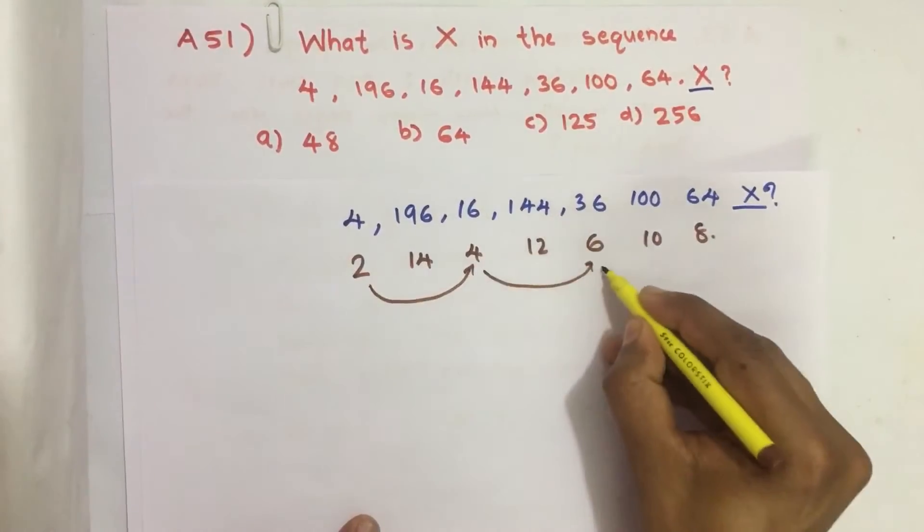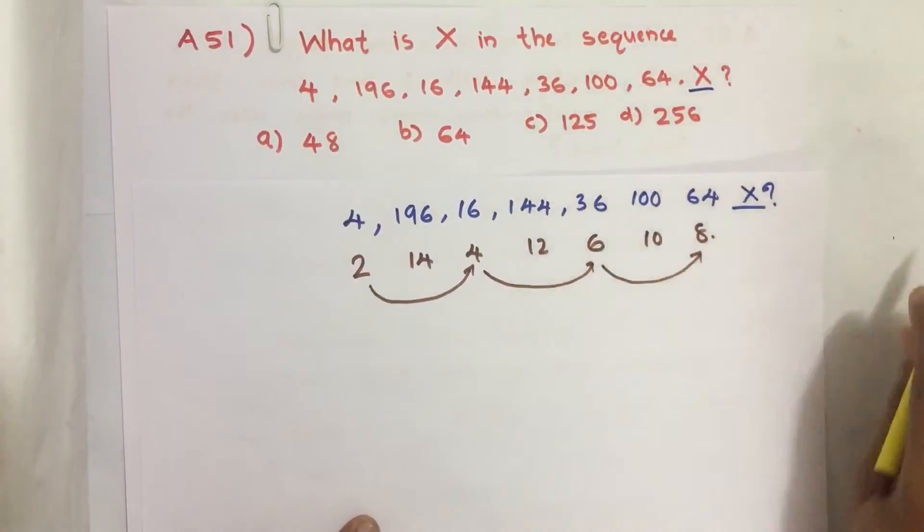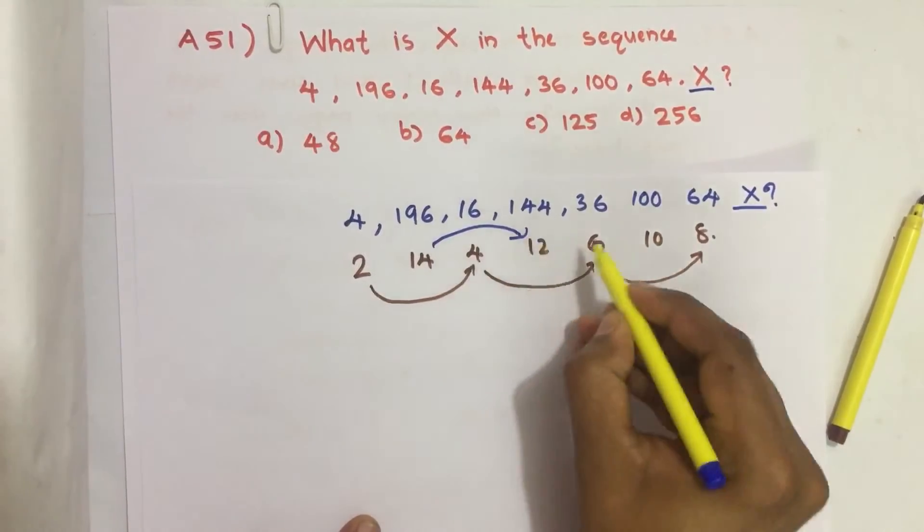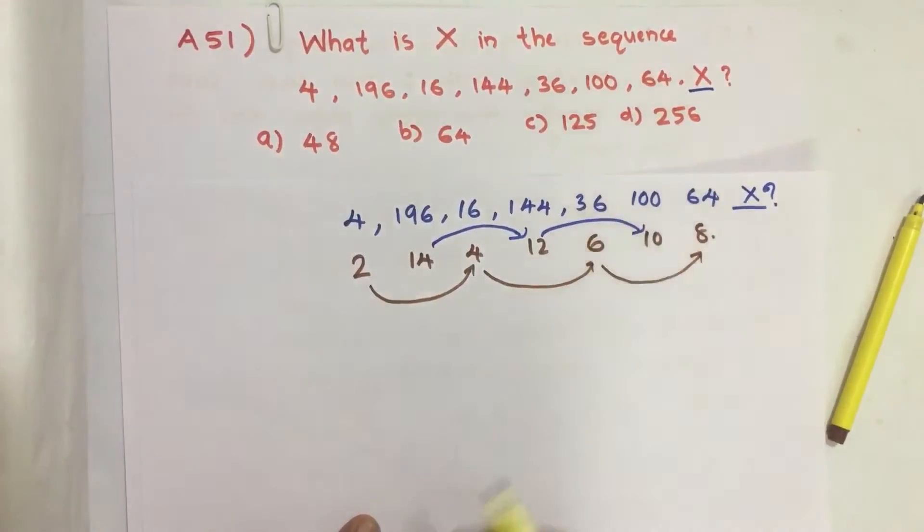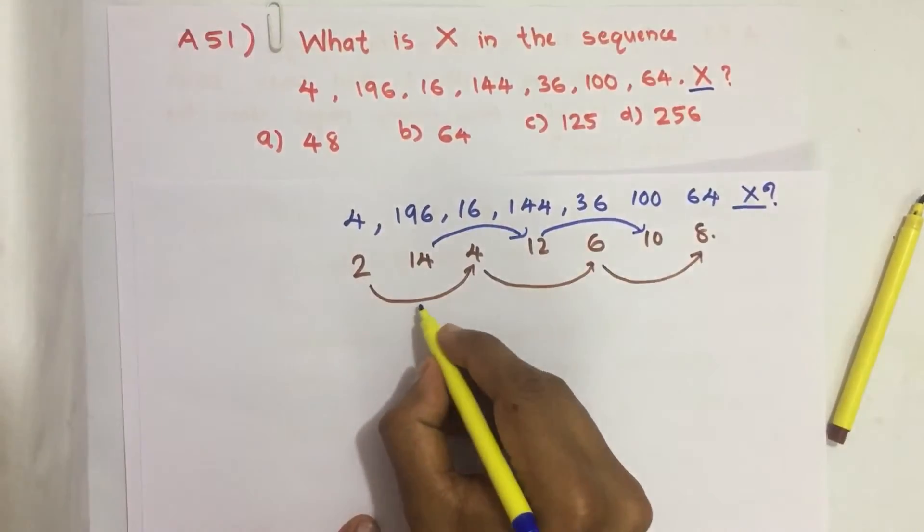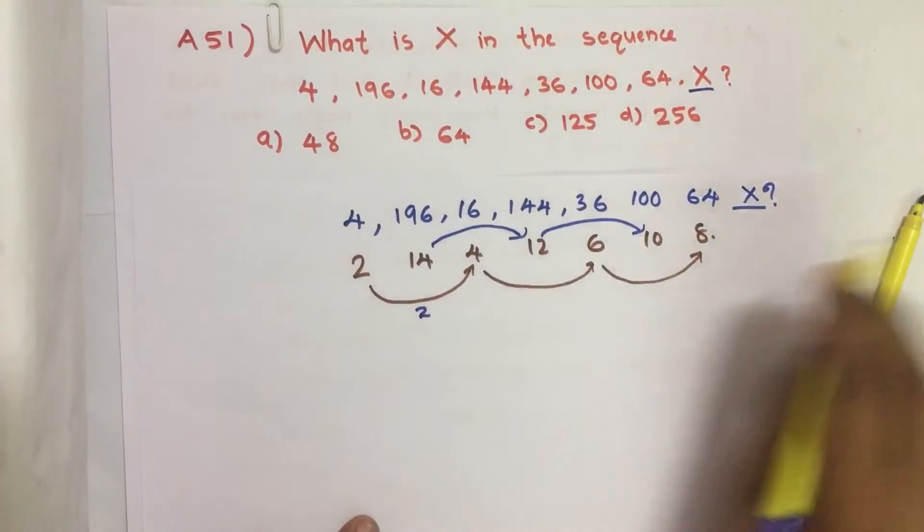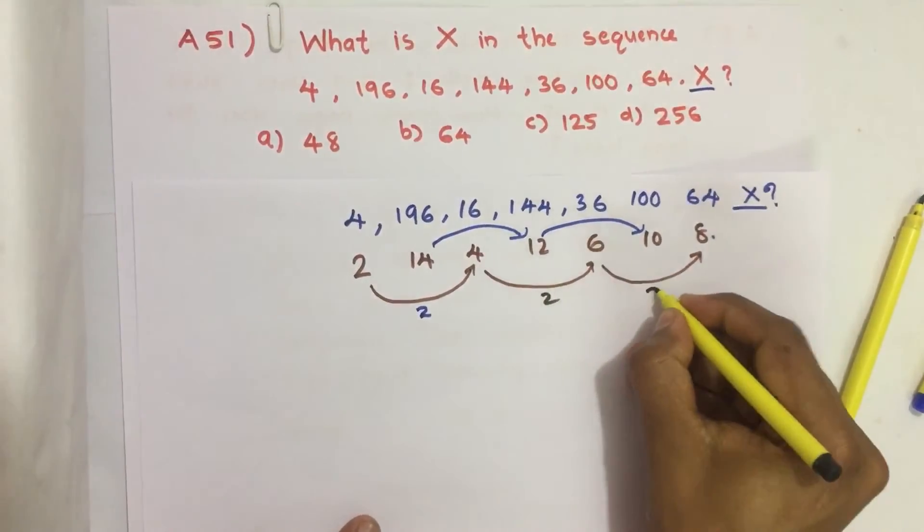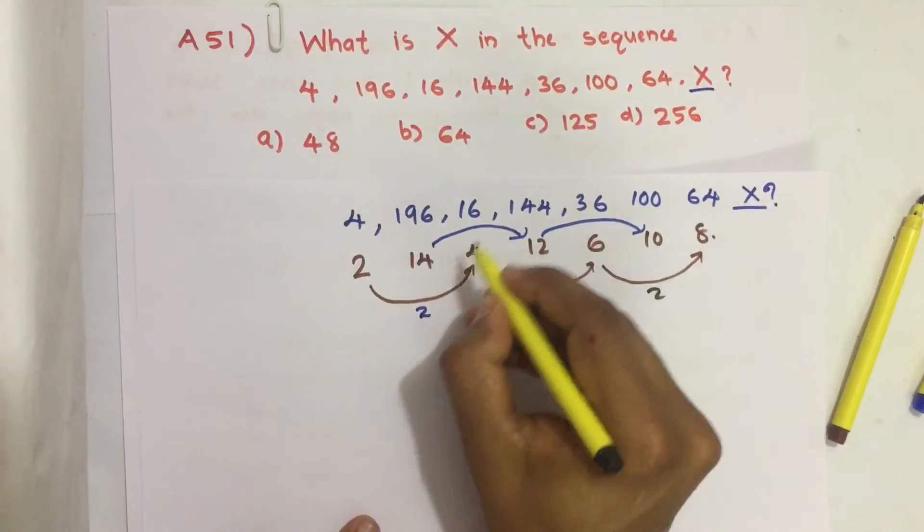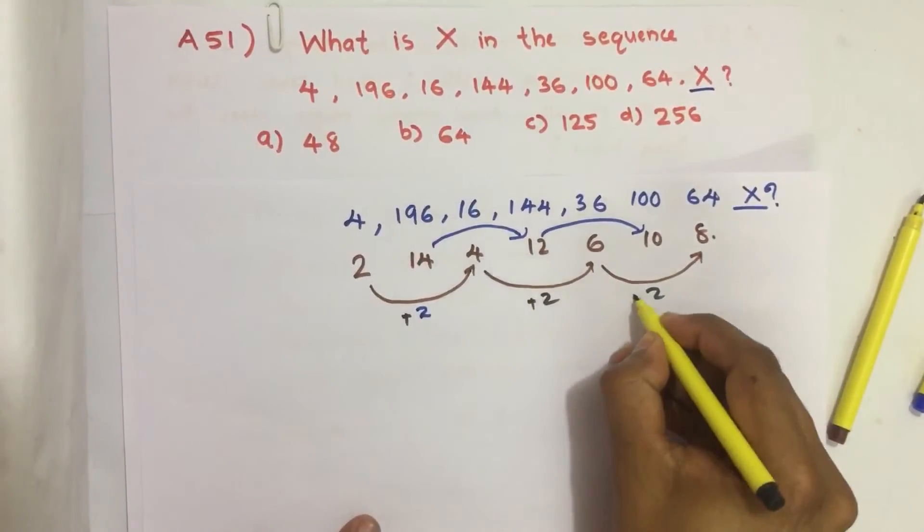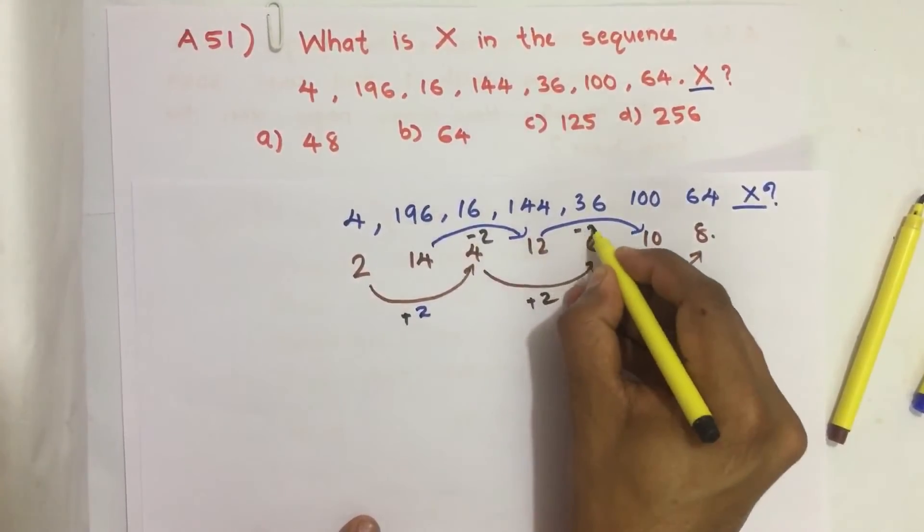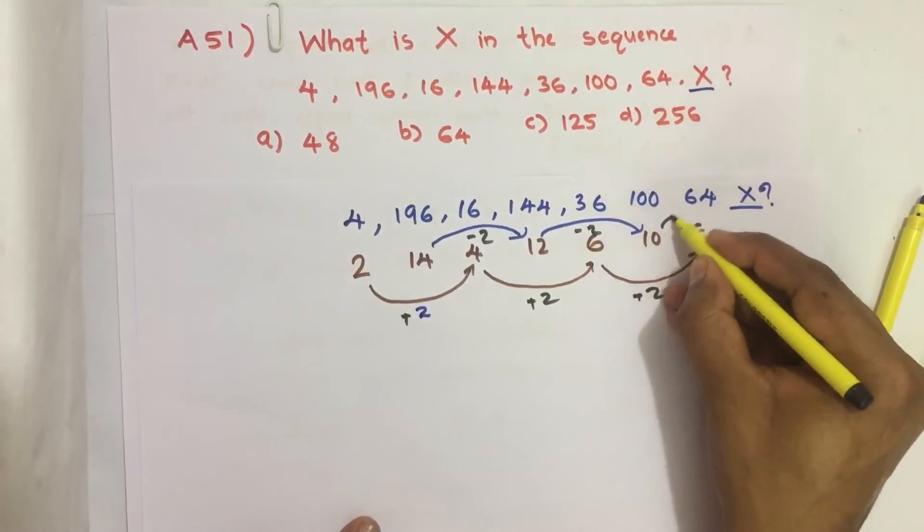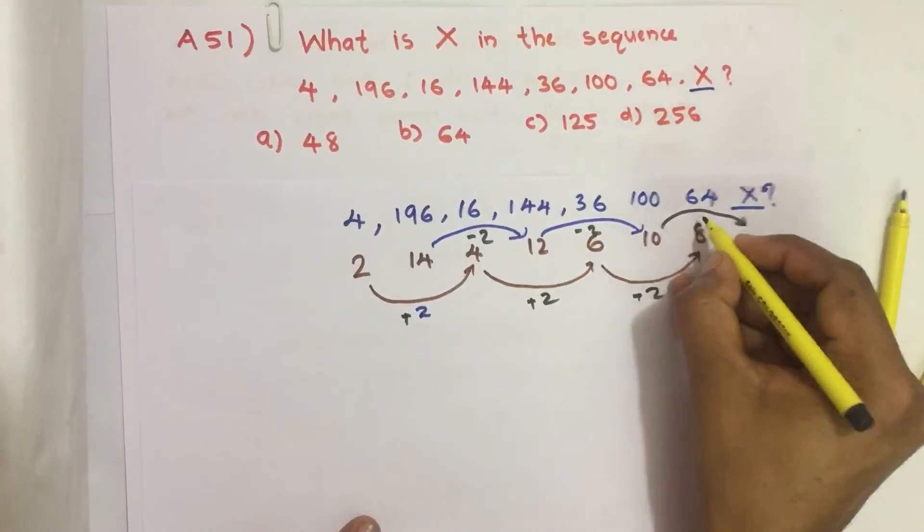The pattern shows numbers alternating between increasing and decreasing. Here it's increasing by 2, then decreasing by 2. So what is the next number? The next number is minus 2, which gives us 8.